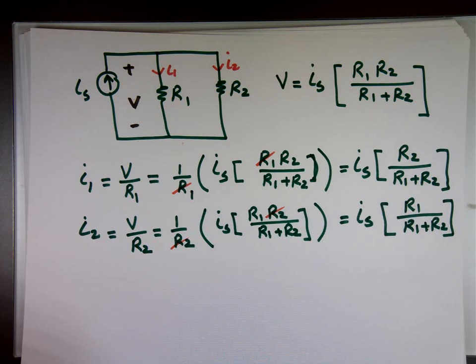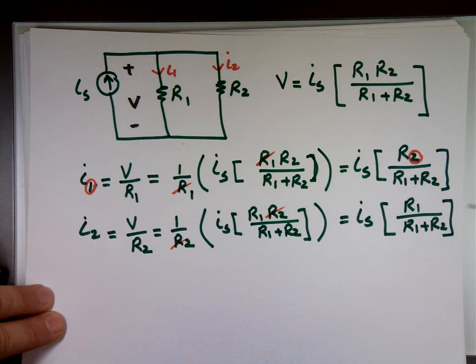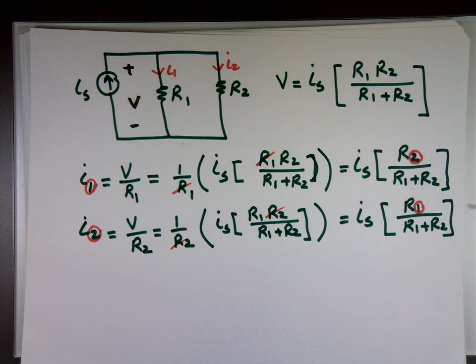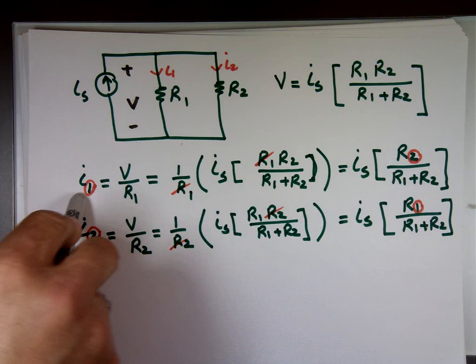The only difference, I don't know if you notice it or not. Notice if you're looking for R sub 1 here, what is on the top? R sub 2. And when you're looking for R sub 2 here, what's on the top? R sub 1. So with current division, these don't match. Voltage division, if you're looking for V1, you got R sub 1 on the top. V2, you got R sub 2 on the top. Here, if you're looking for I sub 1, you got R sub 2 on the top. And if you're looking for I sub 2, you got R sub 1 on the top.